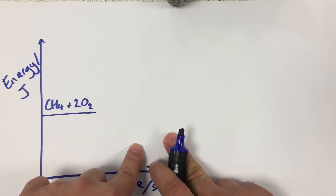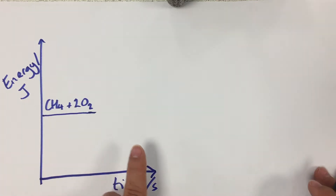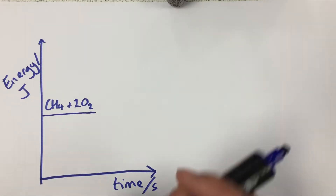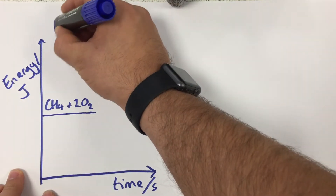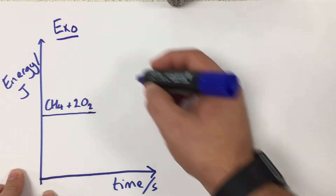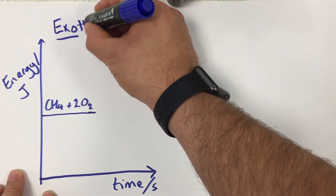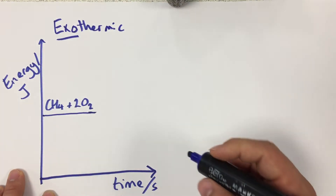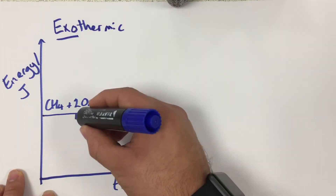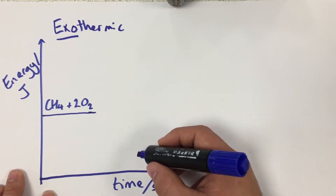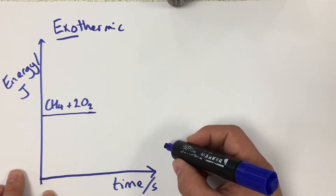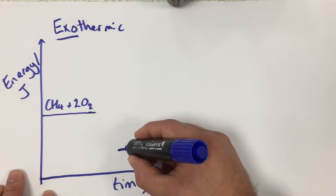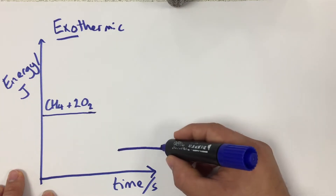When we finish the reaction, energy is given out, so heat is given to the surroundings. This is an example of an exothermic reaction — 'exo' meaning out — so heat is given out. Because heat is given out, in terms of the energy stored in the bonds of carbon dioxide and water, the energy is lower on our energy profile diagram.